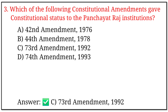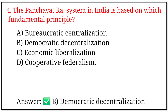3. Which constitutional amendment gave constitutional status to the Panchayat Raj institutions? Options a, b, c, and d. The correct option is c: 73rd Amendment, 1992. 4. The Panchayat Raj system in India is based on which fundamental principle? Options a, b, c, and d. The correct option is b: democratic decentralization.